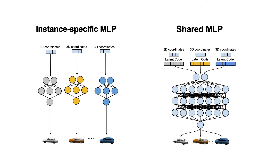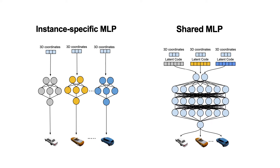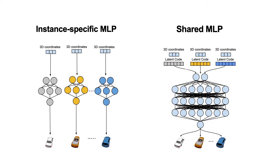Our framework uses fully weight-encoded, instance-specific MLPs to represent each object, as shown on the left, in comparison to a traditional approach of using one shared MLP with instance-specific latent codes, as shown on the right. Since each instance-specific MLP only needs the capacity to describe a single object instance, they can be much smaller compared to a shared MLP. Thus our approach can be significantly faster for scenes containing multiple objects.